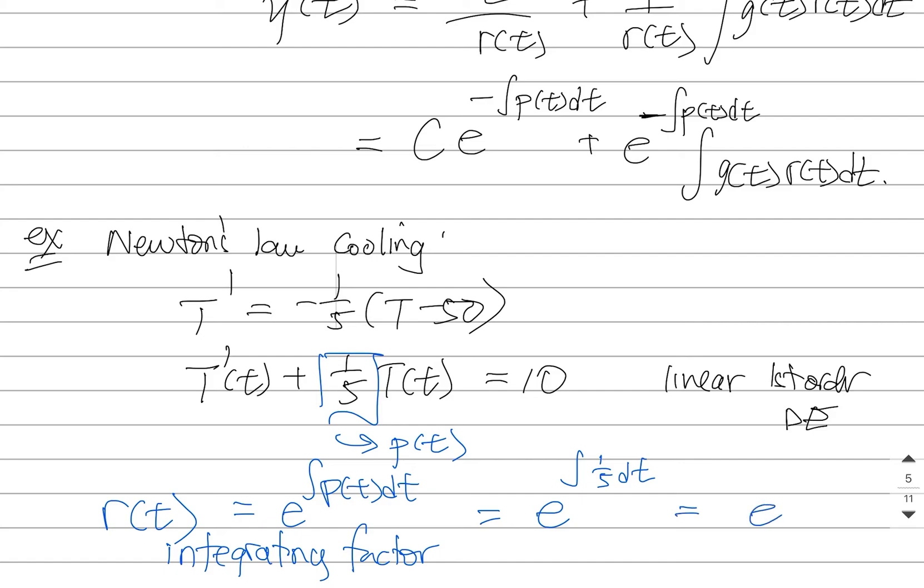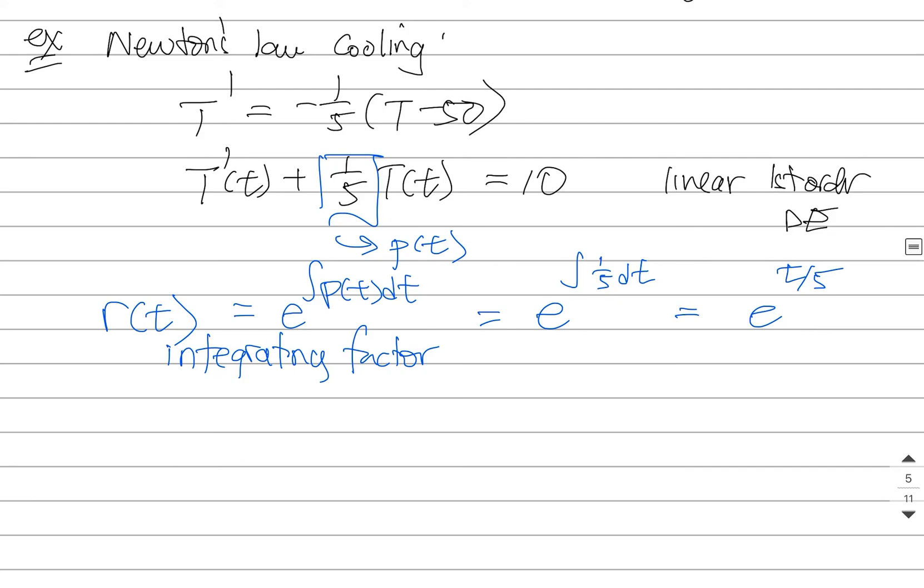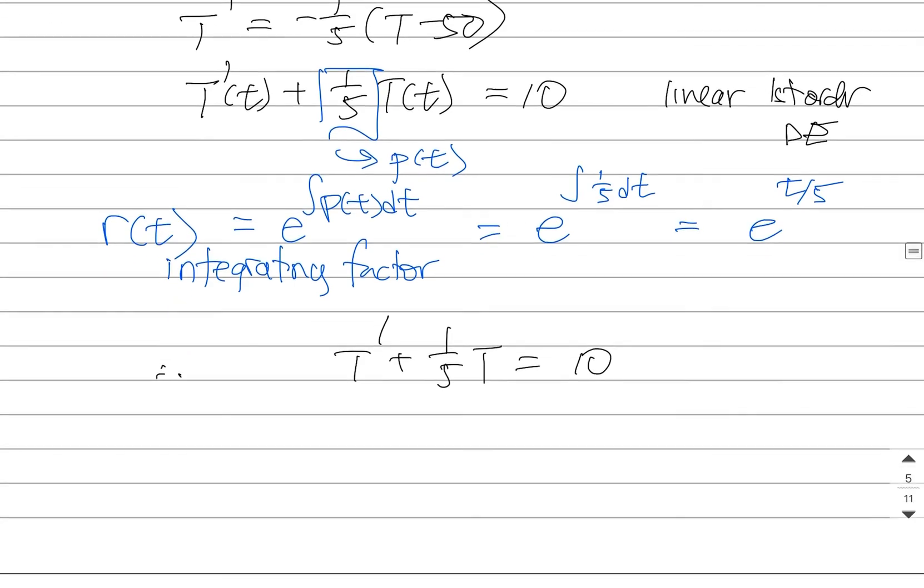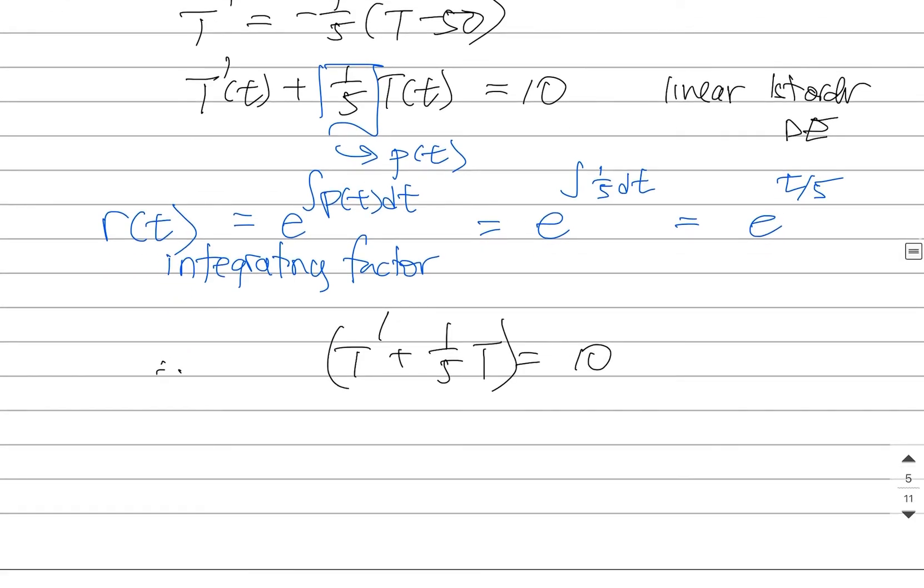So that's going to be e^(t/5). That's the magic function that I need to multiply both sides of this equation by to turn it into a perfect derivative on the left-hand side. So if I take e^(t/5), and I multiply it on both sides, it will always be the case that this turns into a perfect derivative of the integrating factor times my function, and I can get to there.